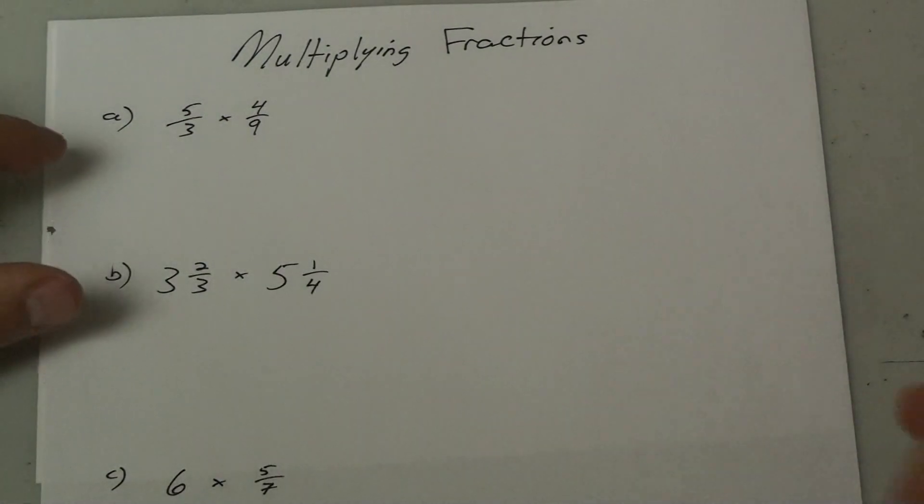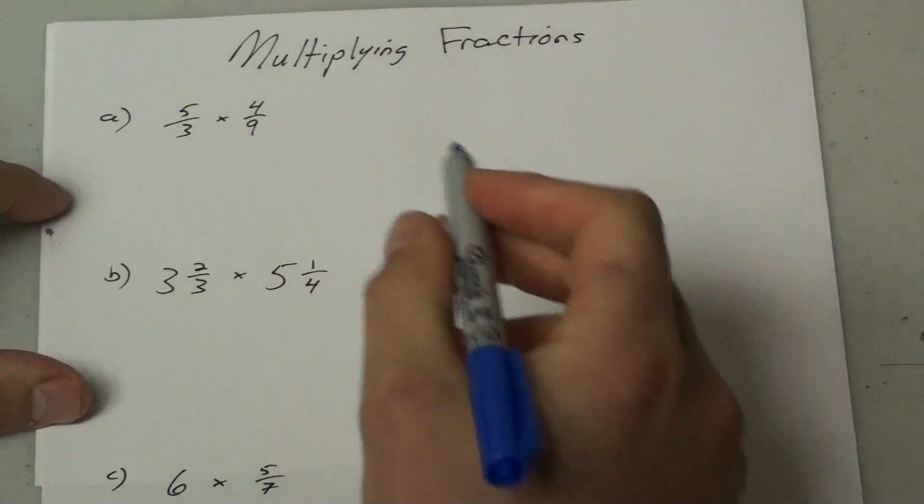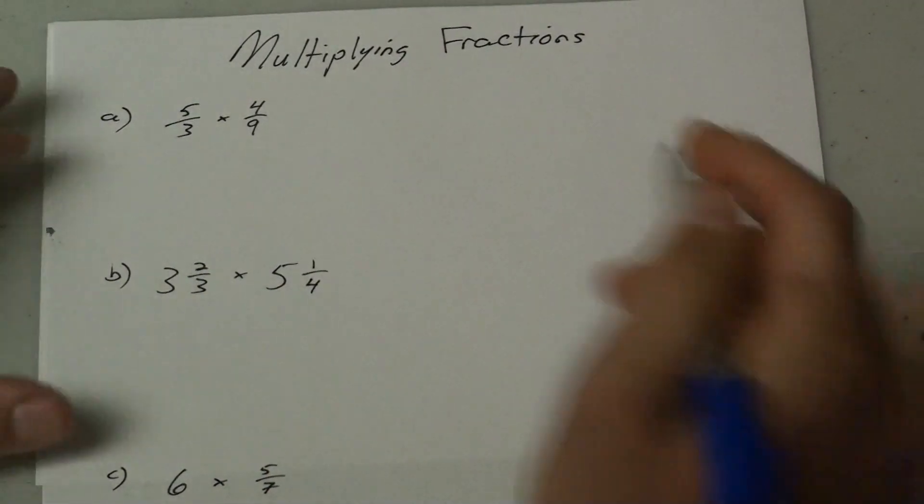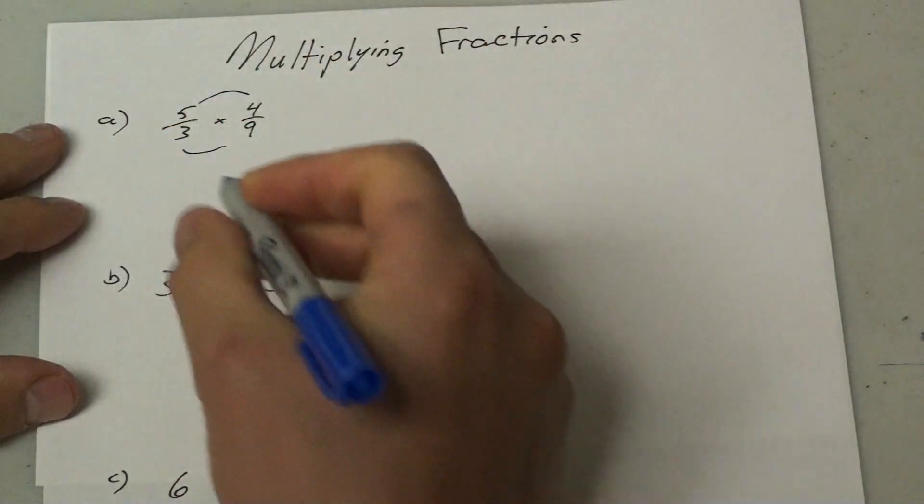Okay, this lesson is on multiplying fractions. When you have one fraction and it's going to multiply another fraction, you do not need a common denominator. All you do is multiply your tops together and multiply your bottoms together.